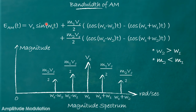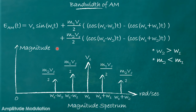From this equation, five frequencies are present: ωc, ωc−ω1, ωc+ω1, ωc−ω2, and ωc+ω2. Plotting the magnitude spectrum with x-axis in radians per second, the corresponding amplitudes are m2*Vc/2, m1*Vc/2, Vc, m1*Vc/2, and m2*Vc/2. This is the magnitude spectrum of the AM signal modulated by an information signal containing two frequencies ω1 and ω2.